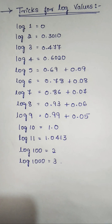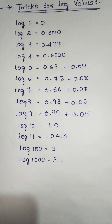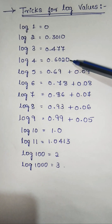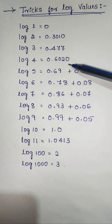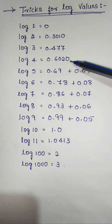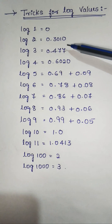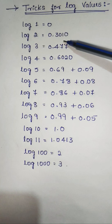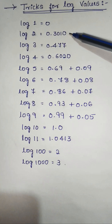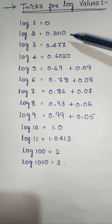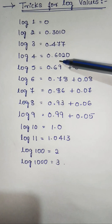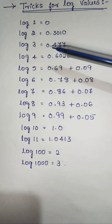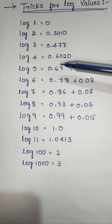You have to remember the log 2 value and log 3 value. Log 4 value is obtained by multiplying the log 2 value — that is 0.3010 multiplied by 2 — then you will get the answer 0.6020. This is the value of log 4.